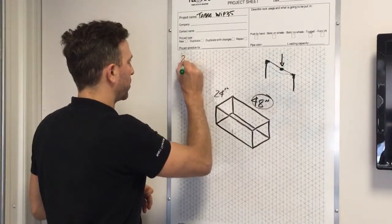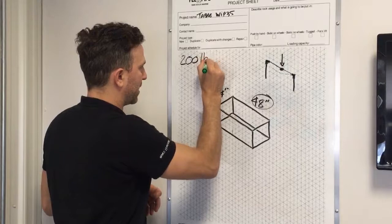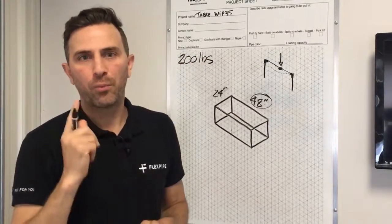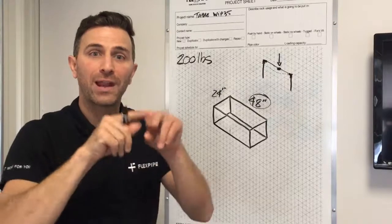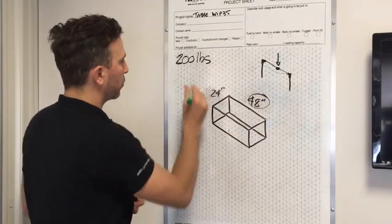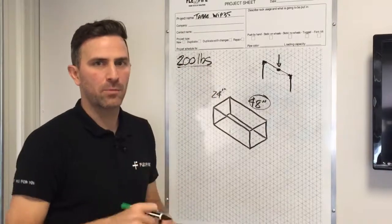48 is 200 pounds capacity and the chart represents one single loading point in the middle of the tube before it has a permanent deflection. This is what we see here. So 200 pounds will be your maximum on one single point.